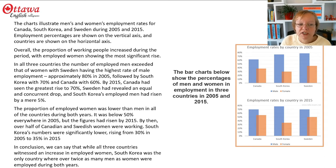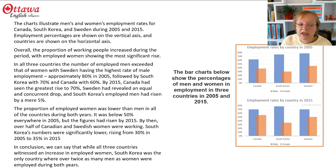In all three countries, the number of employed men exceeded that of women, with Sweden having the highest rate of male employment — approximately 80% in 2005 — followed by South Korea with 70% and Canada with 60%. By 2015, Canada had seen the greatest rise to 70%, Sweden had revealed an equal and concurrent drop, and South Korea's employed men had risen by a mere 5%.